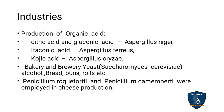Industries — first, organic acid production. Citric acid and gluconic acid are obtained from Aspergillus niger. Itaconic acid is taken from Aspergillus terreus. Kojic acid is taken from Aspergillus oryzae.